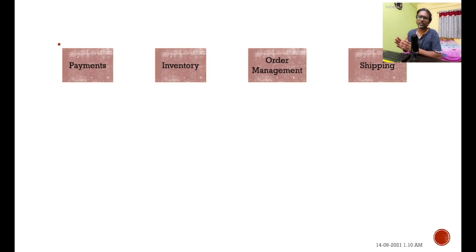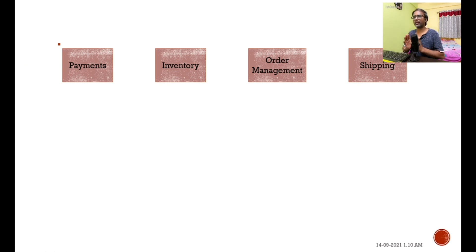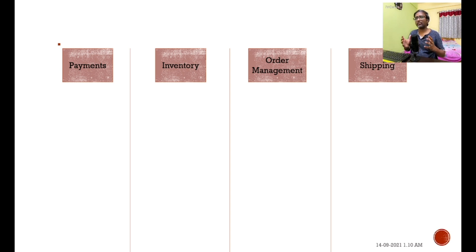When you talk about an e-commerce application, you typically have payment, inventory, order management, and shipping — there are many areas, but let's consider these four. I want to build an e-commerce application and I identified these four different domains as crucial: payment, inventory, order management, and shipping.